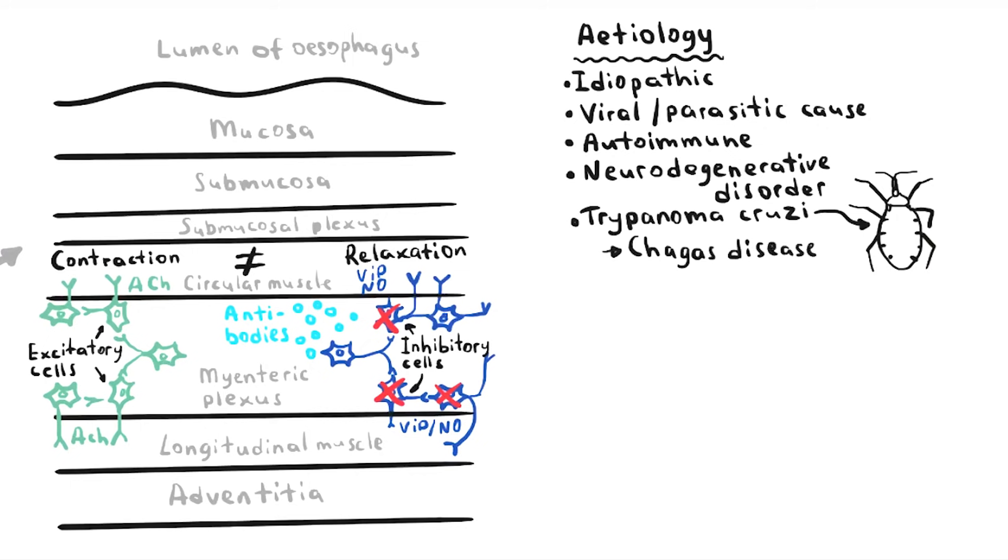In Chagas disease, other parts of the gastrointestinal tract are also affected. On a separate note, patients with serum antibodies to the herpes simplex virus, human papillomavirus, and the rubeola virus have been shown to have higher incidences of achalasia.